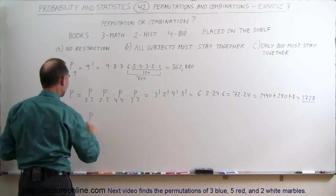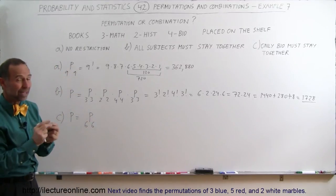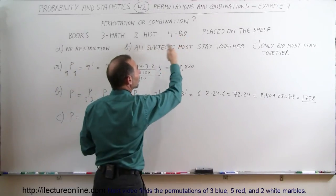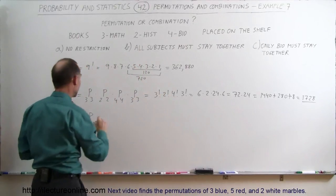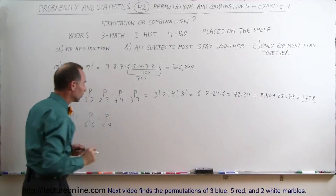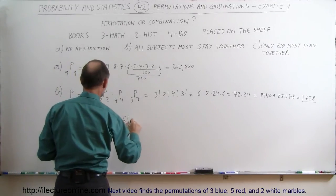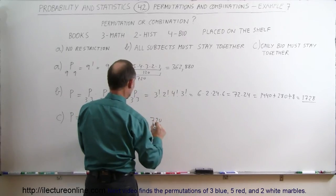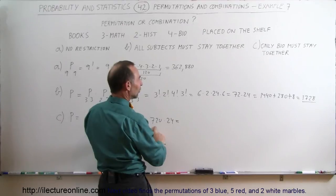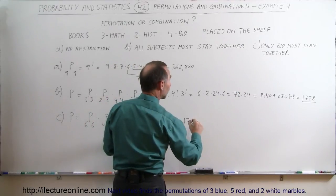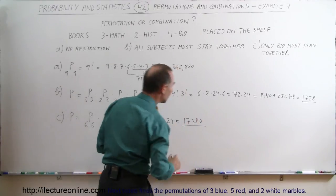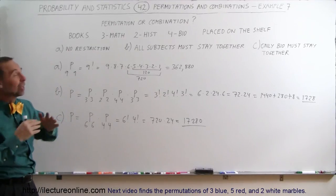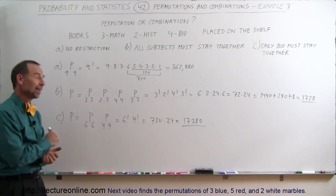Therefore the number of permutations is the permutations of six books in six spaces — meaning three math, two history, and the biology block treated as one — but we also have to account for the biology books being arranged within themselves. So we multiply by the permutations of four biology books in four spaces. This becomes six factorial times four factorial, which is 720 times 24, equaling 17,280 different permutations when three math books and two history books can be arranged freely and the four biology books must stay together.